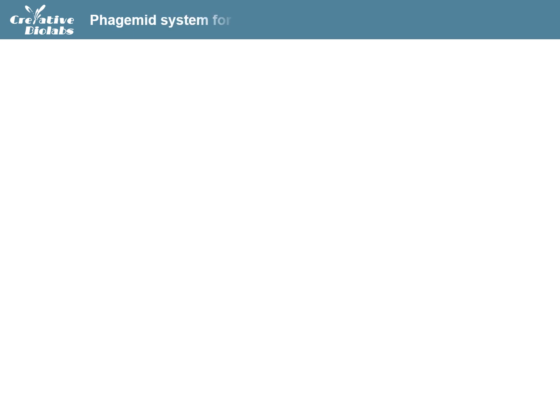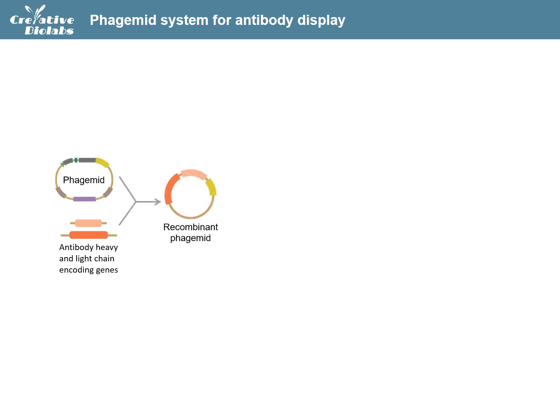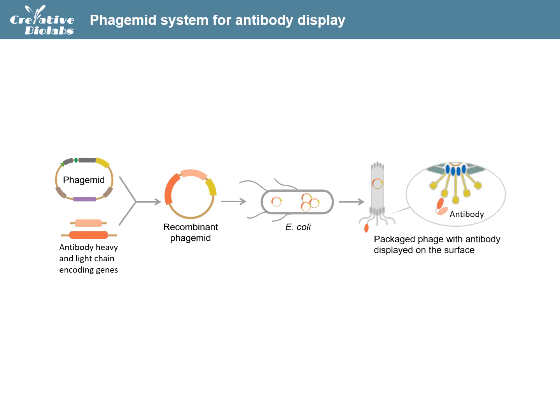A typical phage display workflow starts with the amplification of heavy and light chain genes of the target antibody, and the construction of recombinant phage display plasmids, or phagemids. Once transformed into E. coli, the recombinant plasmids will be replicated, translated, and assembled into infective phages, with the target monoclonal antibody displayed on the surface. However, this system usually produces a low ratio of phages carrying the target antibody.